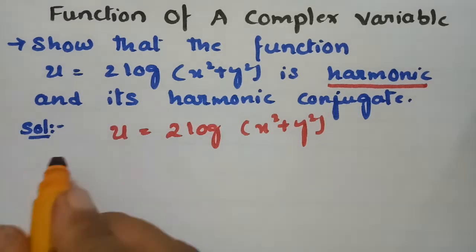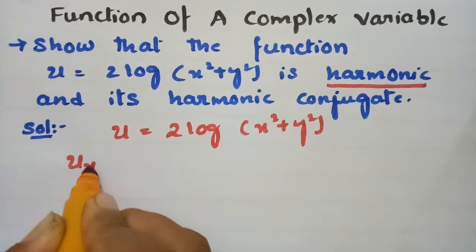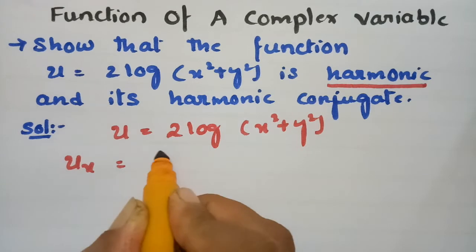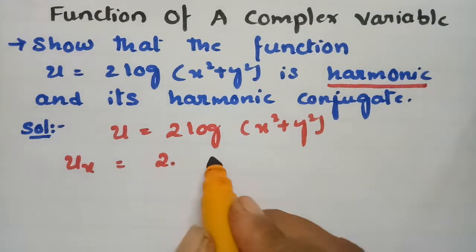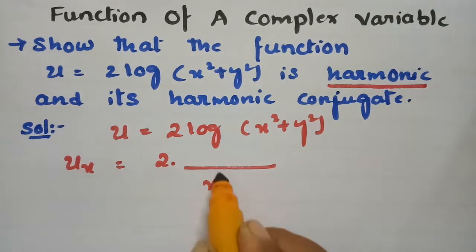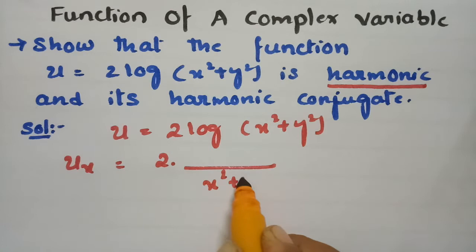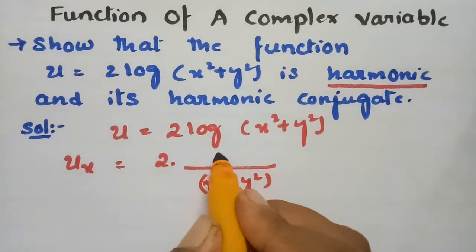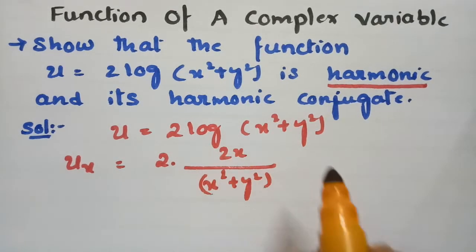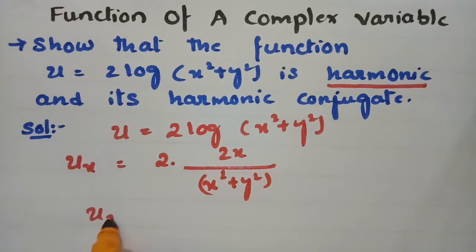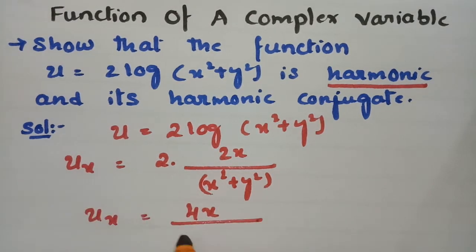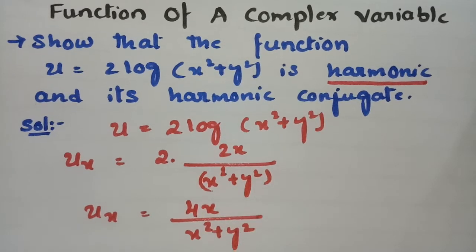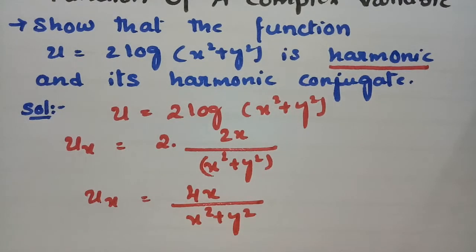First of all, I have to make a derivative with respect to x. So, differentiating 2 log(x² + y²) with respect to x: the derivative of log is 1 by x square plus y square, and the derivative of x square plus y square with respect to x is 2x. Therefore, ux is equal to 4x divided by x square plus y square. This is equation number 1.